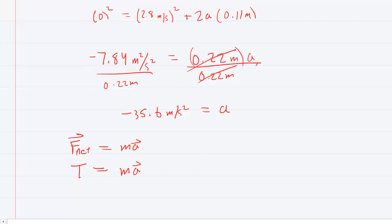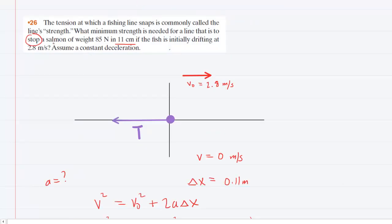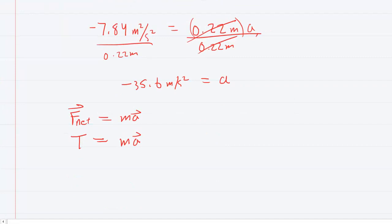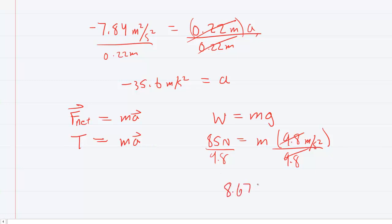The mass of the fish can be determined because we were given the weight of the fish, which was 85 newtons. We recall that weight is equal to mass times the gravitational constant. So we'll take the weight of 85 newtons and set that equal to mass times 9.8 meters per second squared. Divide both sides by 9.8 meters per second squared. That will give you the mass of this fish, which turns out to be about 8.67 kilograms.